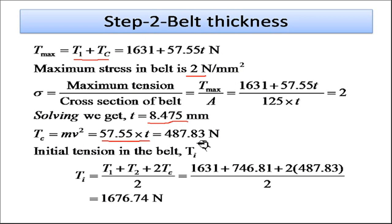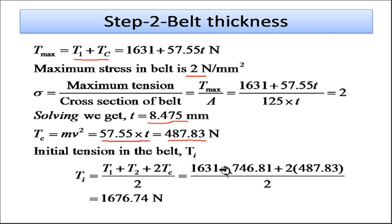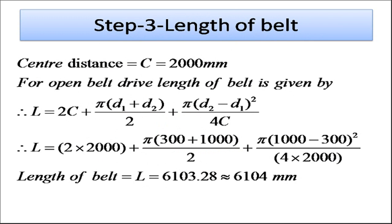With t = 8.5 mm, Tc = 57.55 × 8.5 = 487.83 N. The initial tension in the belt is T0 = (T1 + T2 + 2Tc) / 2 = (1631 + 746.81 + 2 × 487.83) / 2 = 1676.74 N. For belt length, using C = 2000 mm, d1 = 300 mm, d2 = 1000 mm in the open belt formula, we get length = 6103.28 mm, rounded to 6104 mm.